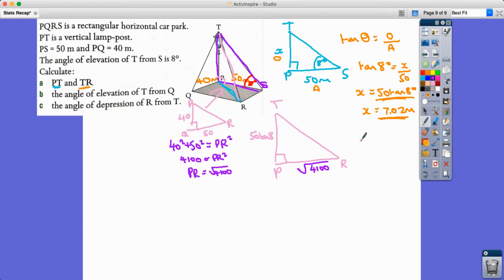Now I just need to work out TR using Pythagoras theorem. So it's going to be 50 tan 8 all squared plus square root of 4100 squared, which equals TR squared. If we square root all of that left-hand side of that equation, we get TR equal to 64.4 meters.